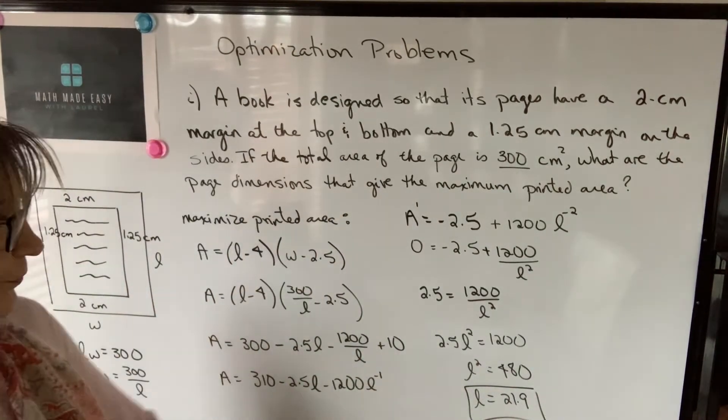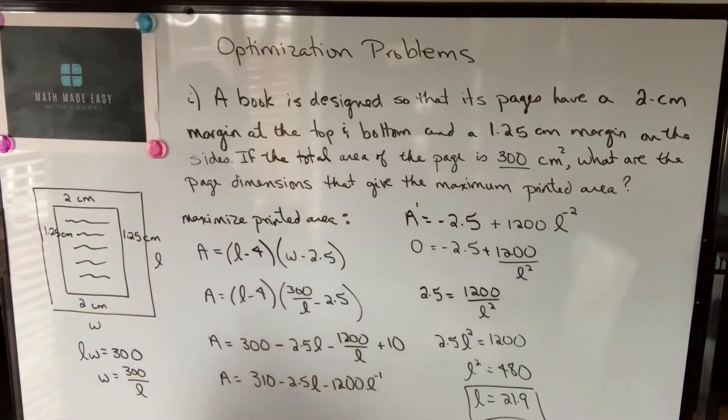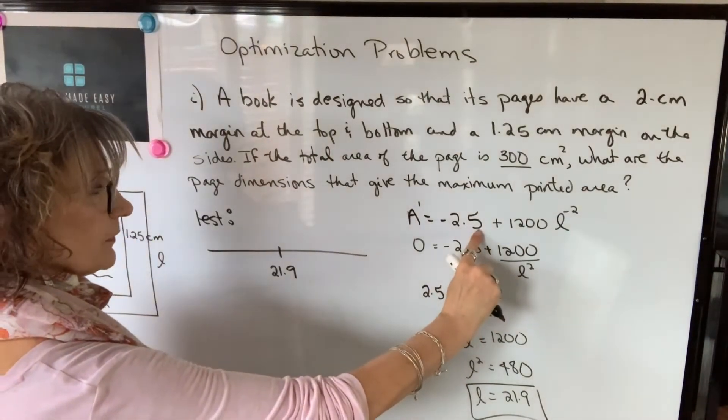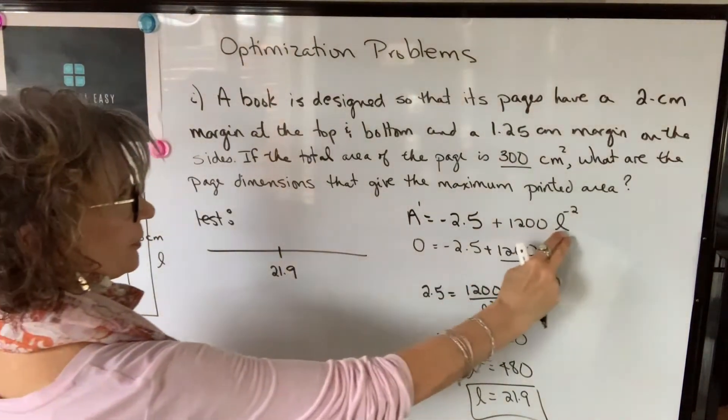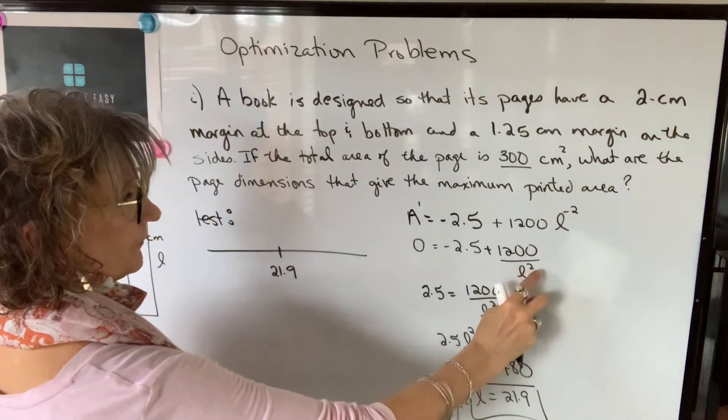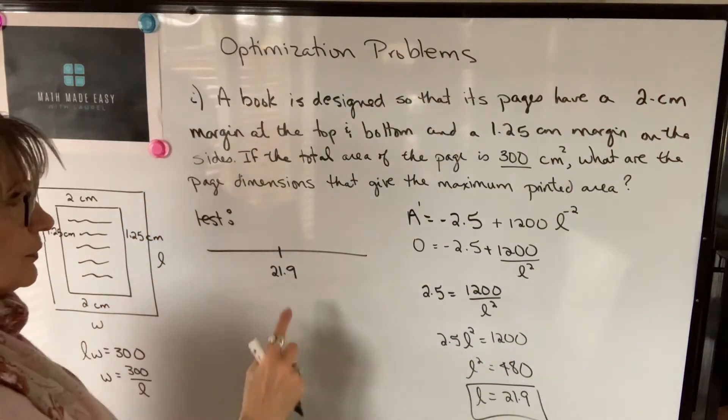We don't know for sure that that will give us a maximum area we need to test. So we're testing the derivative in this interval. I can't choose zero like I normally do because I would have a denominator equal to zero, so I'll choose one.